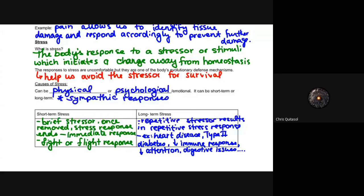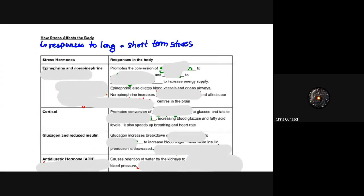When thinking about how stress affects our body, it's important to recognize that short-term and long-term stress have hugely different impacts. The first stress hormones to discuss are epinephrine and norepinephrine — these are adrenal hormones from the adrenal glands. Epinephrine promotes the conversion of glycogen to glucose and fatty acids, increasing energy supply. When you have that adrenaline surge, your body wants to increase the energy it has access to — normally in response to a fight-or-flight situation.